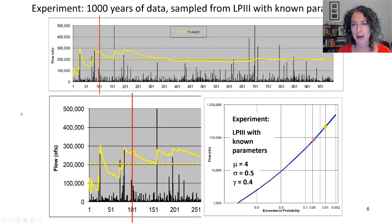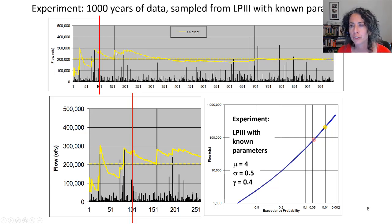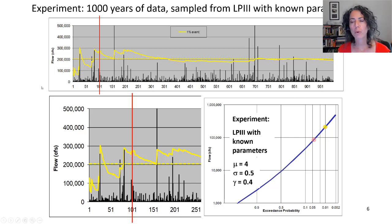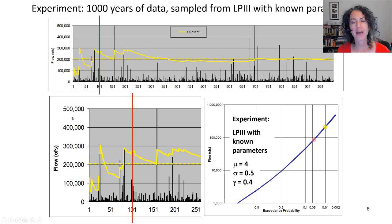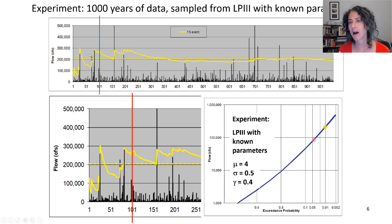Looking at just the 1% event: every time we have a large event, our skew coefficient goes way up, and our mean and standard deviation go up as well, so our 1% event estimate shoots up every time we have a big event. We usually recompute frequency curves after a big event happens. When we do, we have to recognize that we're computing these high points. Even though the estimate goes down over the following years after a big event, it's going to go up again with the next big event.